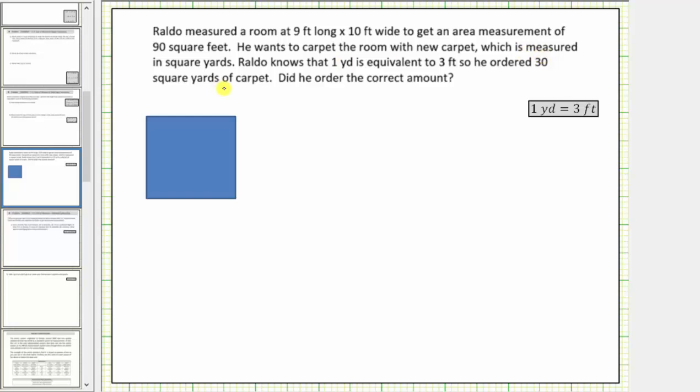Notice to get thirty square yards, Roldo took the area of ninety square feet and divided by three because there are three feet in one yard. However, this does not work because the area is in square units or two-dimensional units and the conversion is in one-dimensional units and therefore Roldo did not order the correct amount.